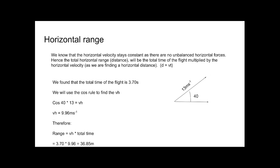To find horizontal range: always find the horizontal component and the total flight time of the object. Find the time to max height, multiply by 2 to get total flight time, then multiply by the horizontal component to get total distance travelled.